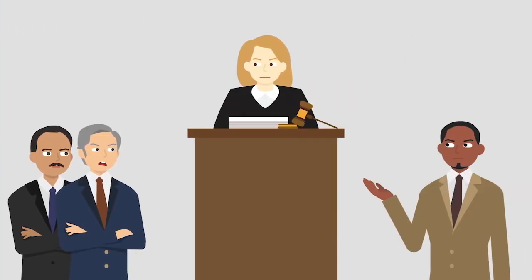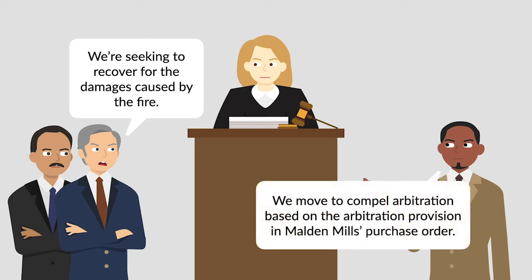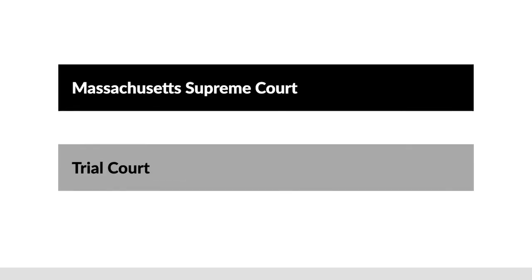Malden Mills, along with its property insurer, Commerce and Industry Insurance Company, filed suit against Bayer, seeking to recover for the damages caused by the fire. Bayer moved to compel arbitration based on the arbitration provision in Malden Mills' purchase order. The trial court denied the motion. Bayer appealed directly to the Massachusetts Supreme Court, which accepted the case.